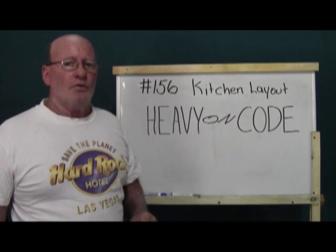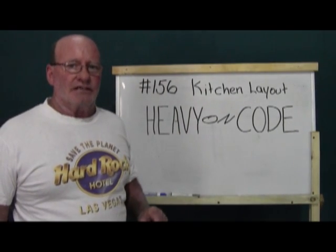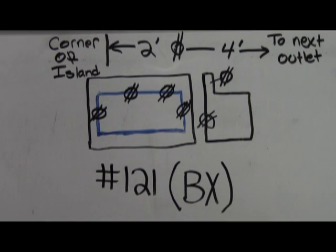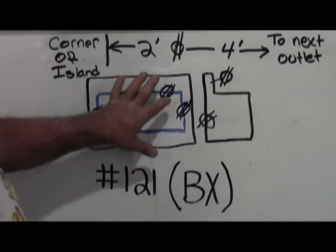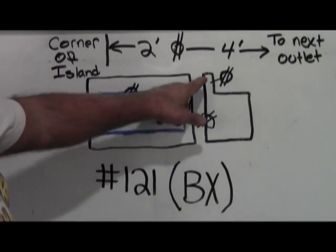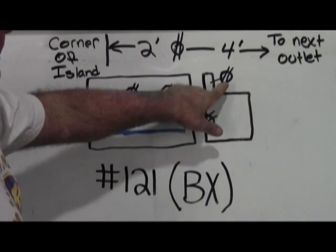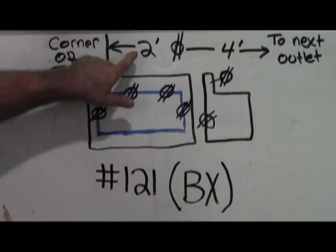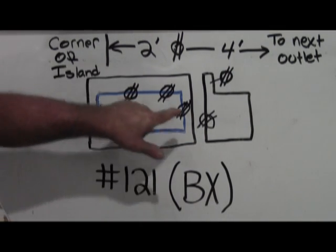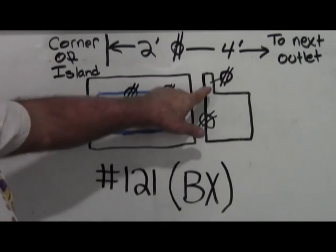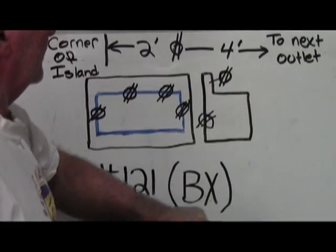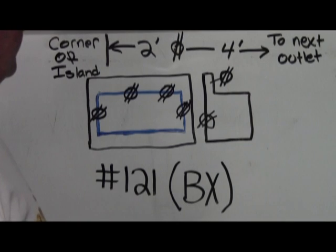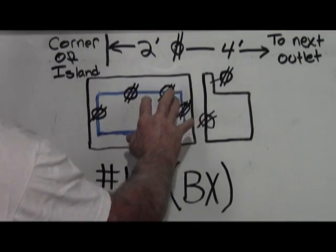The first thing we're going to start out with is the island. First thing to consider is that an island either has a backsplash or it does not. If it has a backsplash, then your outlets have to be within two feet of the edge of the backsplash, and then every four feet apart to the next outlet.